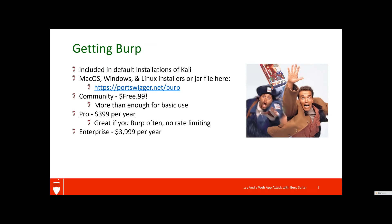How do you get Burp? It is included in default installations of Kali, which a lot of you may be familiar with. You can also get native versions on Mac OS, Windows, and Linux. It's also written in Java, so you can get a JAR file to run Burp from PortSwigger's website. There are three main versions: the community version is free and is more than enough for basic average use, especially if you're just getting started. The pro version is $399 a year — it's a really great tool and well worth the cost if you use Burp often or you're trying to do more automated attacks without the rate limiting we'll see in a few slides.